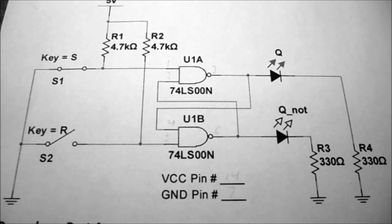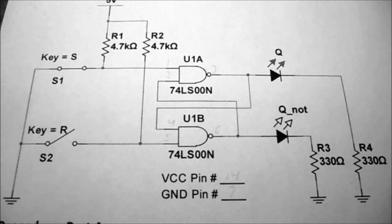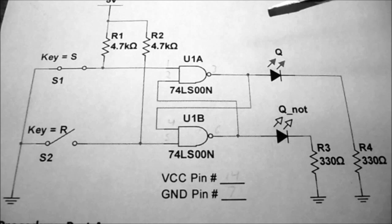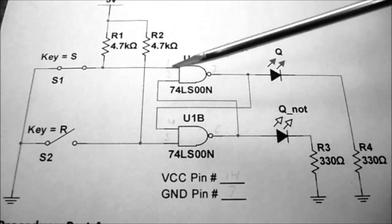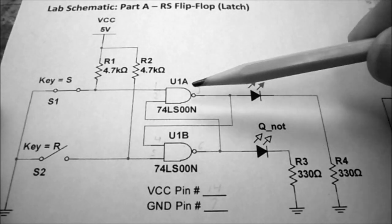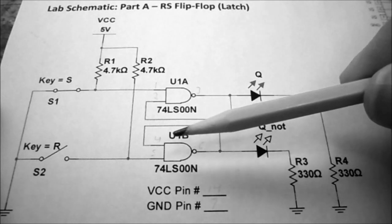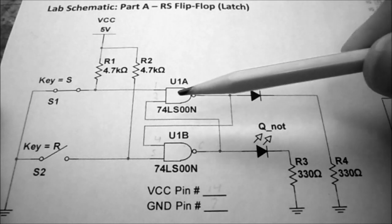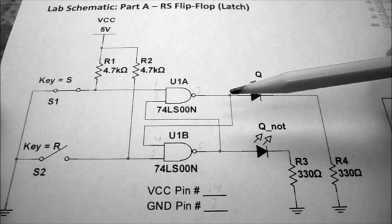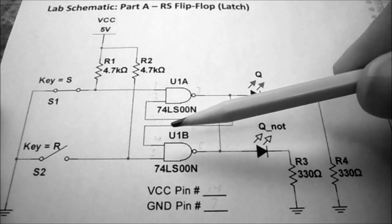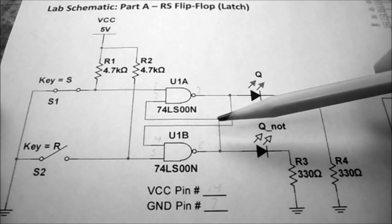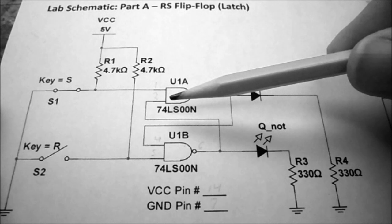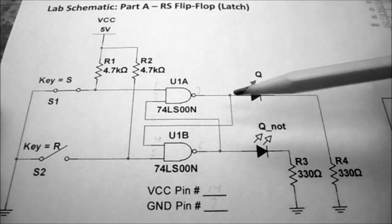This is the schematic from your lab — Part A, RS flip-flop. I've put the pin numbers down, and you should know what the pin numbers are for the 7400. The RS flip-flop is rather hard to analyze because the output from the first NAND gate feeds the input of the second NAND gate, and the output of the second NAND gate feeds back into the first NAND gate, making these very hard to analyze.